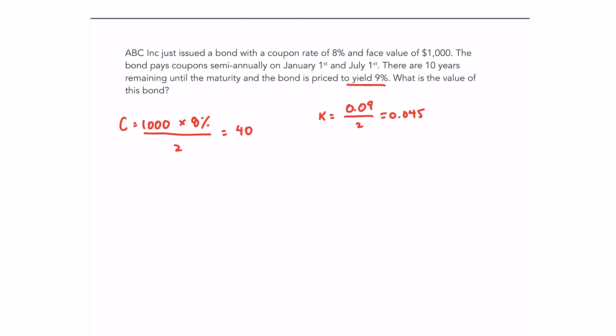Okay, so now to find the present value of a bond, we have a long formula. It's basically a combination of an ordinary annuity and a lump sum. So the price of the bond is 40, which is the coupon payment multiplied by 1 minus 1 plus the rate to the power negative N. So since there are 10 years remaining until maturity, but the bond pays coupons semi-annually, we have 20 payments remaining. So I'll put that to the power of negative 20, all that divided by 0.045.